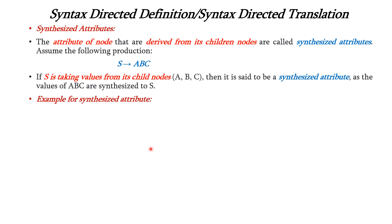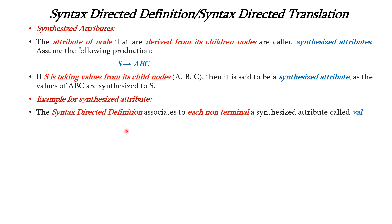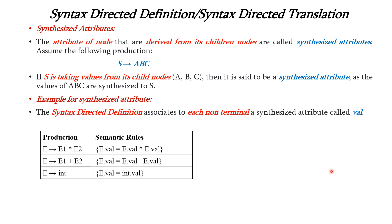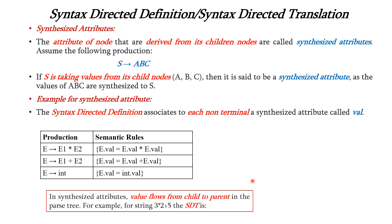Let us see an example for synthesized attribute. The SDD associates to each non-terminal a synthesized attribute called val. We have three productions and associated semantic rules. The first one performs multiplication, the second one performs addition, and the third one assigns the integer value to E. In synthesized attributes, values will be flowing from child to parent. The actions can be represented in the form of an SDT, which can be represented as a parse tree.